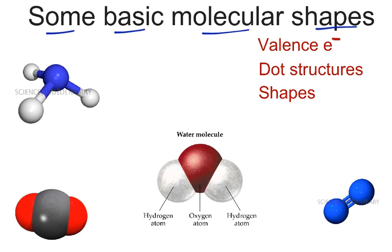We know from experience what valence electrons are, and valence electrons influence our dot structures. We've drawn dot structures in the past, and now what we're going to do is use these dot structures to help us draw shapes. The shapes are determined by unshared and shared pairs of electrons, and there was a theory that we read in homework.